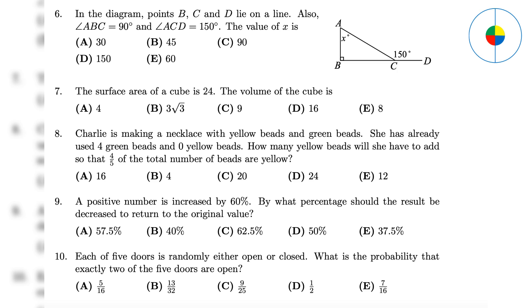Question 6: Angle ACB is 30, so X is 90 minus 30 equals 60. Question 7: If you know the formula for surface area and volume of a cube, you know the answer is E.